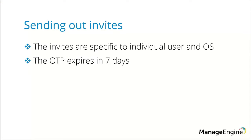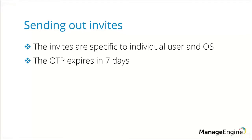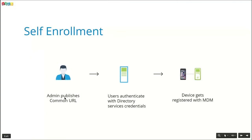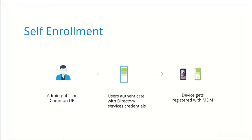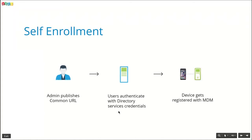There are two things to keep in mind before sending out invites: these invites are user-specific and device OS-specific. For security reasons, the OTP sent with the invite will expire in seven days. So, if you want to enroll devices in bulk with minimal admin intervention, or you're unaware of the device platforms, you can choose the self-enrollment method. In self-enrollment, the admin publishes a common URL in the organization. Users use this common URL to access the enrollment window and authenticate themselves with their directory credentials. Hence, it is mandatory to integrate your directory services with MDM to enable self-enrollment.